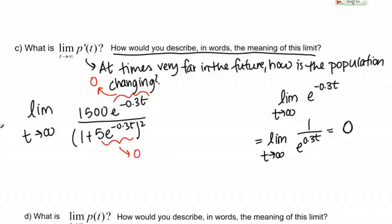What do I get? I've got on the top 1,500 times 0, so that's just 0. And then on the bottom, I've got 1 plus 0. So, I see that this limit equals 0. What does that tell me? That tells me that I should expect, when we look at the graph of this function, that as time goes to infinity, the function is approaching 0, which tells me that the rate of change of the population approaches 0 at times far in the future.